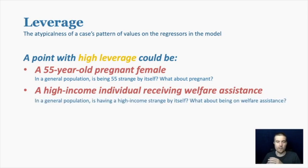Another with this one you can think in the general population is having a high income strange by itself. What about being on welfare? Both of those are fairly common. Maybe high income, not so much. Regardless, together they're really rare.